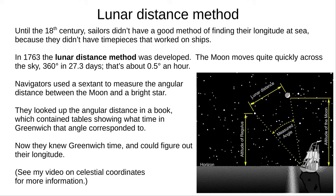Then, they looked up the angular distance in a book. This book had pre-calculated tables, that showed the current time at Greenwich, for that angle. With that, and other bits of information discussed in my other video, they could figure out their longitude.